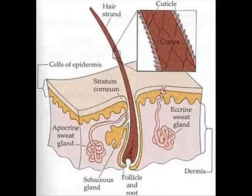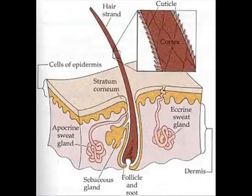If the core body temperature gets too high, hairs lie flat on the surface of the skin, providing little insulation, so more heat can be lost by convection and radiation. When the rabbit's body temperature becomes too low, his hairs are raised to trap a layer of insulating air. This reduces the heat lost from the skin.